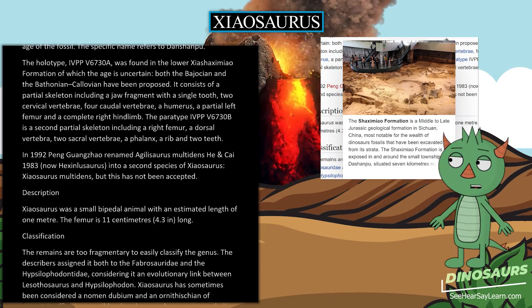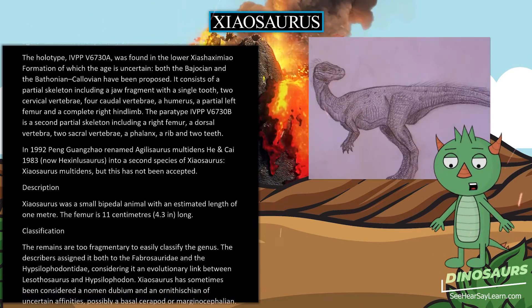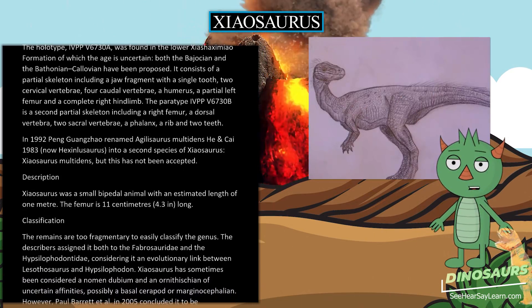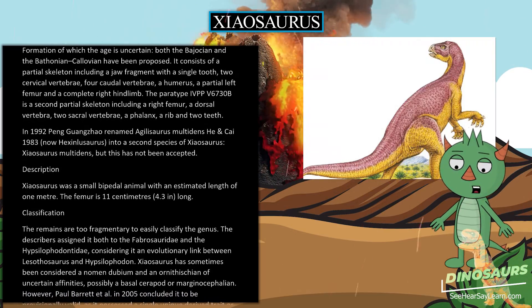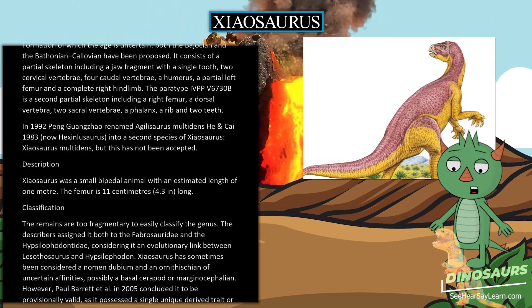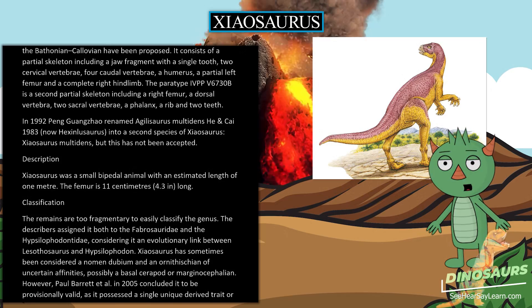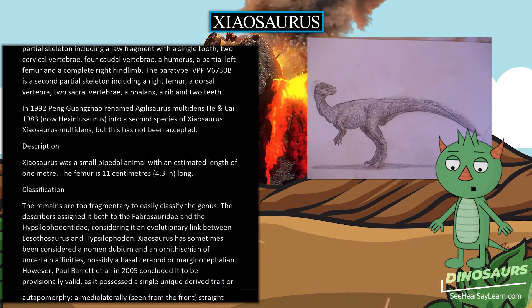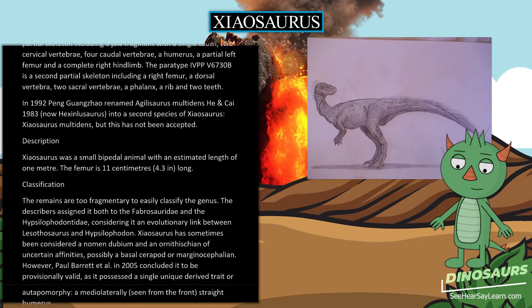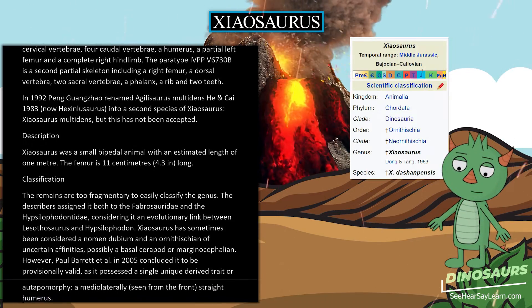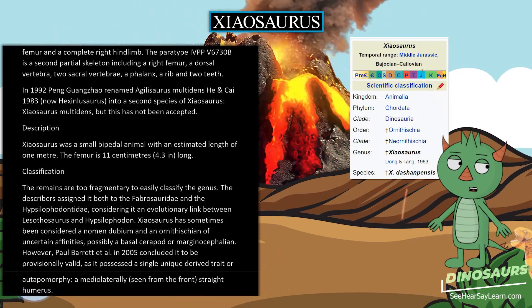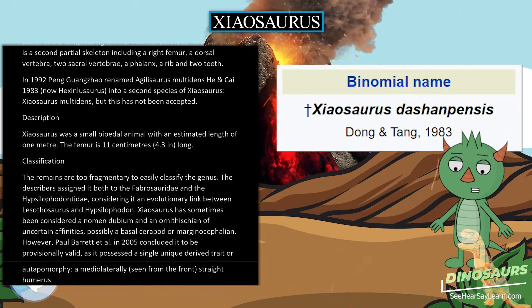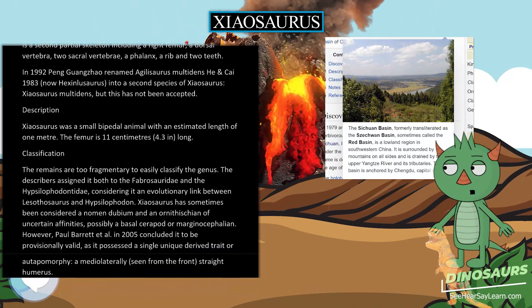The remains are too fragmentary to easily classify the genus. The describers assigned it both to the Fabrosauridae and the Hypsilophodontidae, considering it an evolutionary link between Lesothosaurus and Hypsilophodon. Shiasaurus has sometimes been considered a nomen dubium and an ornithischian of uncertain affinities, possibly a basal ceropod or Marginocephalian. However, Paul Barrett et al. in 2005 concluded it to be provisionally valid, as it possessed a single unique derived trait or autapomorphy: a medially-laterally, seen from the front, straight humerus.